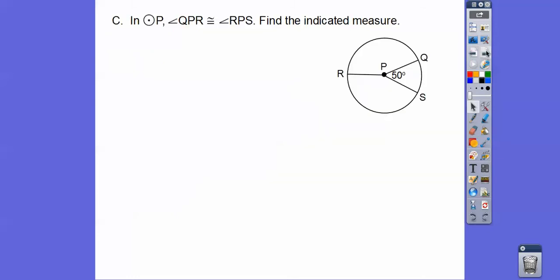So in circle P, it says angle QPR is equal to angle RPS. So if this angle equals this angle, then this arc here equals this arc here. The radius is 6. Find the measure of arc QRS. So start here, QRS. Well, the whole circle is 360. So if I take off that, we get 310 degrees.